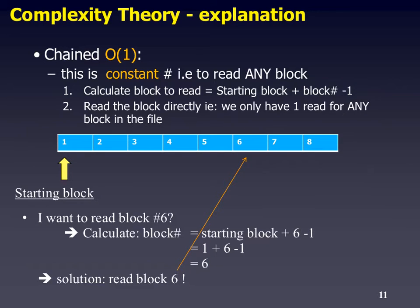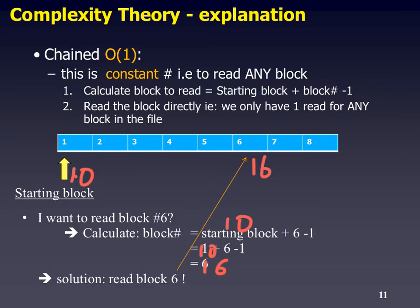Now what happens if the starting block is number ten? Simple — our calculation becomes ten plus six minus one, and we look up block sixteen. So if we start off at ten, we get block sixteen. Again, one read. Very quick and efficient.